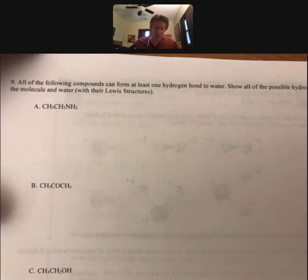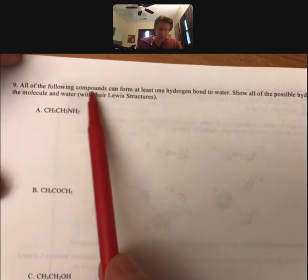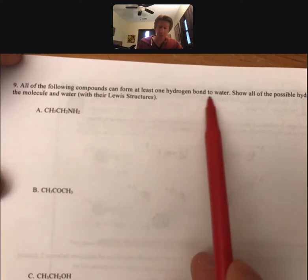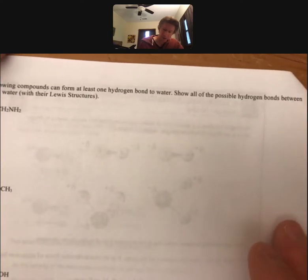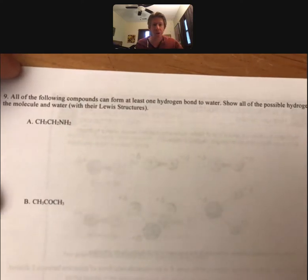There's another key concept with hydrogen bonds. It says all of the following compounds can form at least one hydrogen bond to water. Show all of the possible hydrogen bonds between the molecule and water with their Lewis structures.